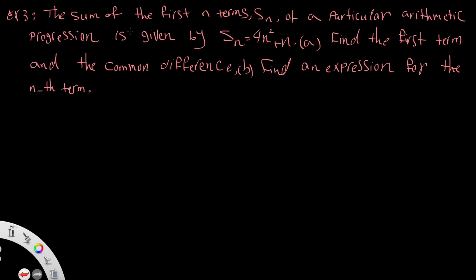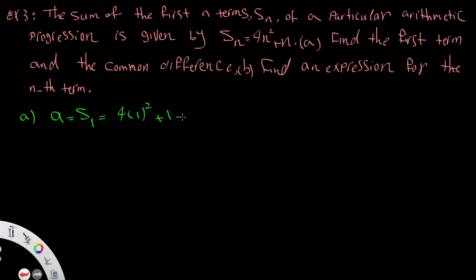Example 3 (Sum): The sum of the first n terms Sn of a particular arithmetic progression is given by Sn = 4n² + n. Part (a): Find the first term and common difference. The first term equals S1 = 4(1)² + 1 = 5.